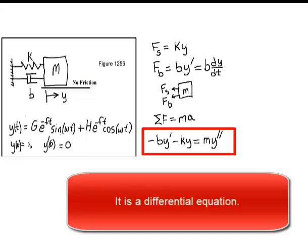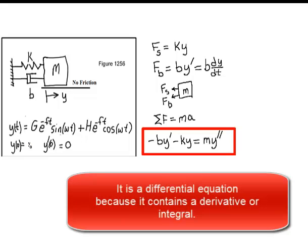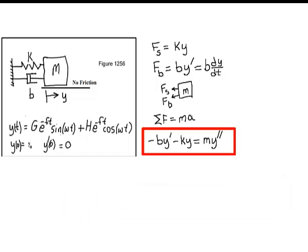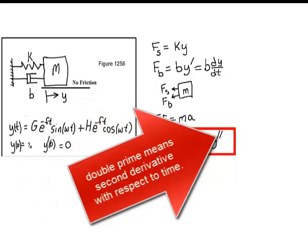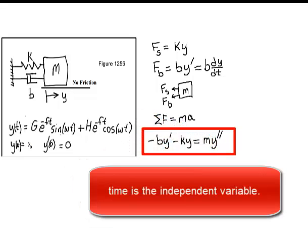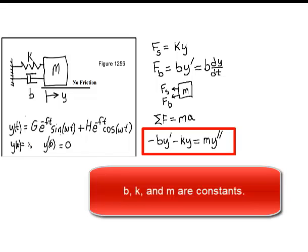It's a differential equation because it contains a derivative or an integral. Prime means derivative with respect to time. Double prime means second derivative with respect to time. Time is the independent variable. Position y is the dependent variable. B, k, and m are constants.